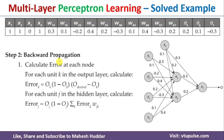To propagate the error backwards, you need to remember two equations: the error at output layer neurons and the error at hidden layer neurons. The error at an output layer neuron is: O_k × (1 − O_k) × (Y_desired − O_k). The error at hidden layer neurons is: O_j × (1 − O_j) × Σ_k (error_k × W_jk), where j is the hidden layer neuron and k is the output layer neuron.